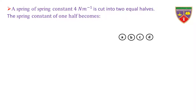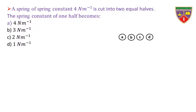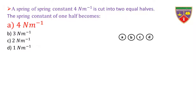A spring of spring constant 4 N/m is cut into two equal halves. The spring constant of one half becomes: Option A: 4 N/m. Option B: 3 N/m. Option C: 2 N/m. Option D: 1 N/m. The key is 4 N/m. Therefore, the correct option is A.